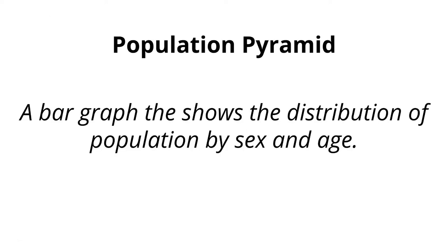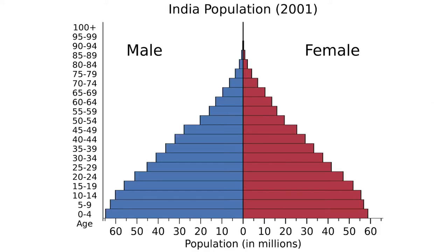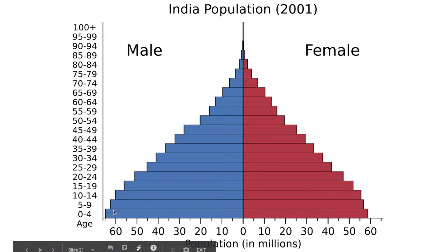A population pyramid is a bar graph that shows the distribution of population by sex and age. Here's India in 2001 — you have your males and your females, and as you can tell, it has a very wide base on this pyramid, which means it's a rapidly growing population.